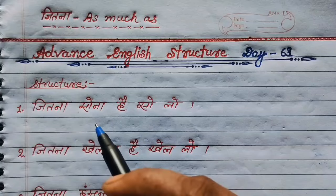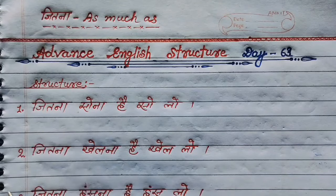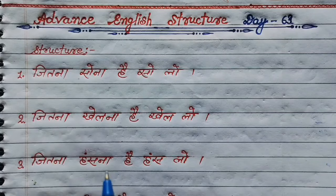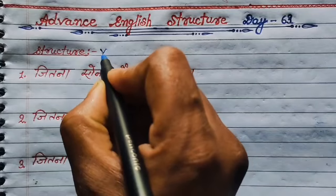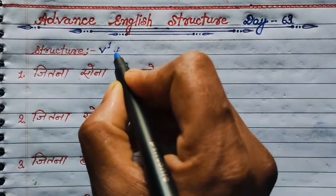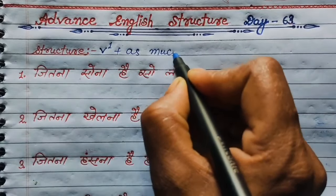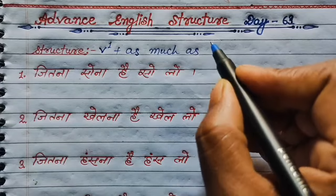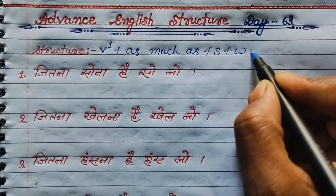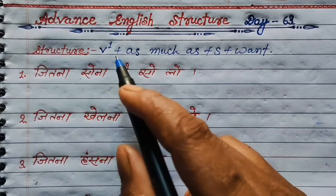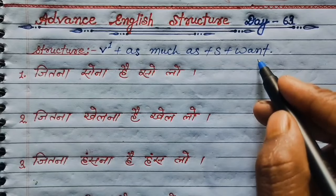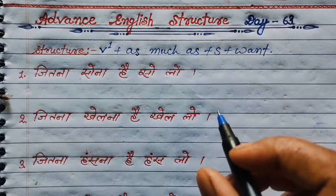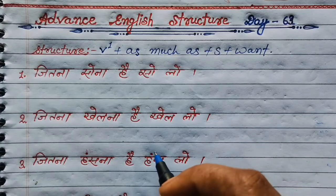तो चलिए guys, इस phrase को structure में रखकर देखते हैं, क्योंकि main तो होता है structure। जब तक यह structure समझ में नहीं आएगा, तब तक sentence नहीं बना पाएंगे। तो पहले आपको यह structure समझना है: first of all, verb की first form का use करना है, then as much as — मतलब जितना — then subject, then want। So the structure is: Verb (first form) + as much as + subject + want।